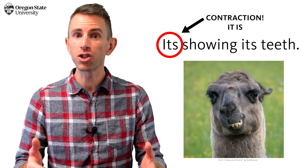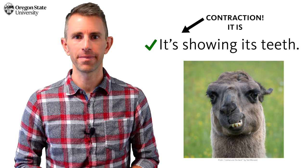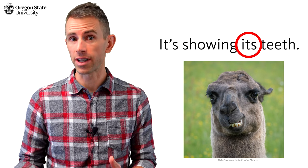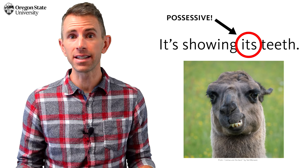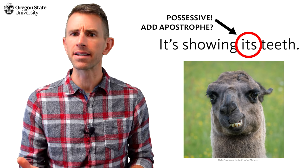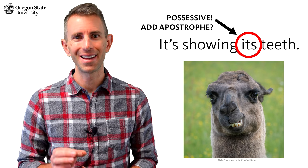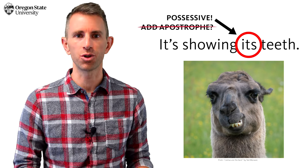We've taken out a letter and we show that with the apostrophe. The second one looks like a possessive, and it is. The it possesses the teeth, so adding apostrophe s seems logical. That's the problem. The right logic in the wrong situation. We actually don't use an apostrophe, and here's why.